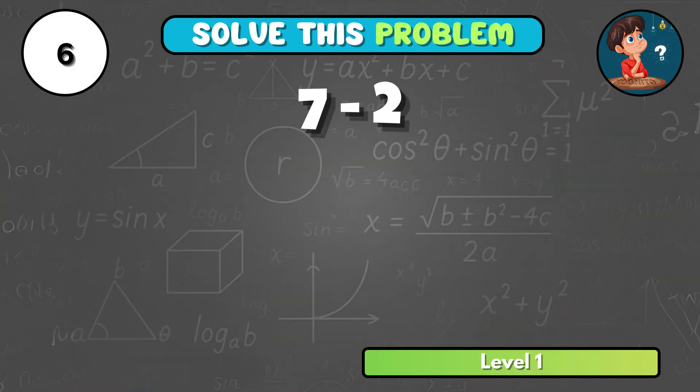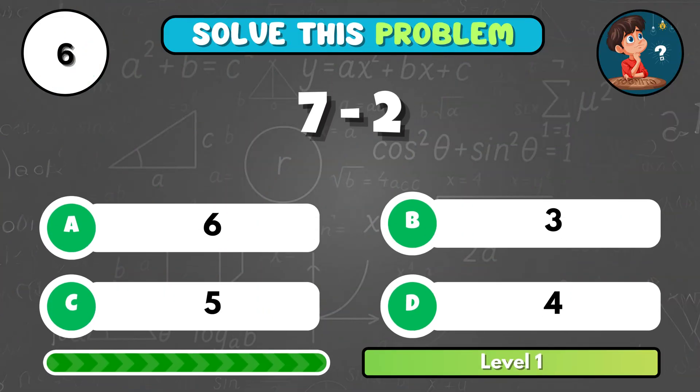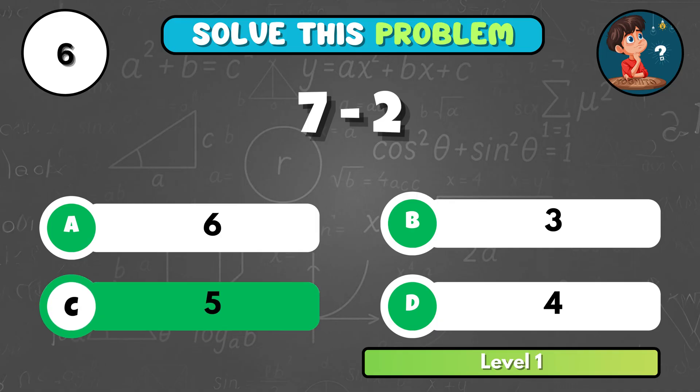What do you get when 7 minus 2? That's C, 5!